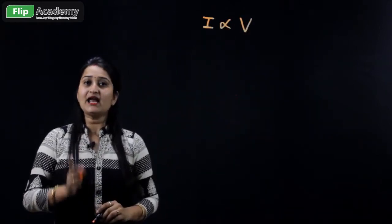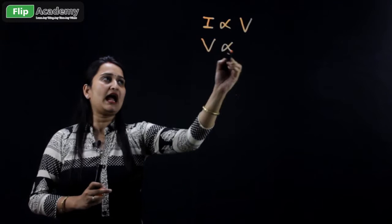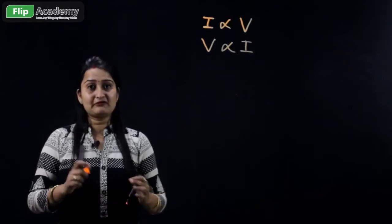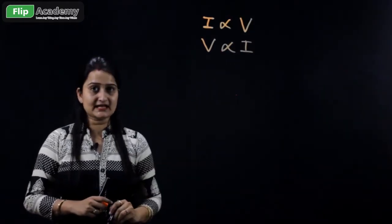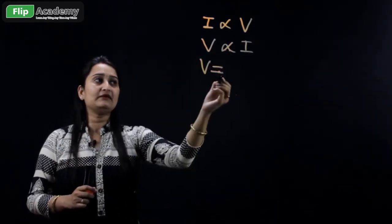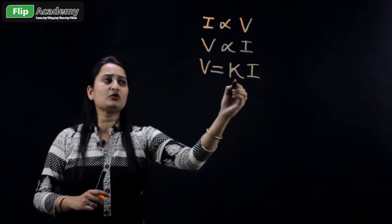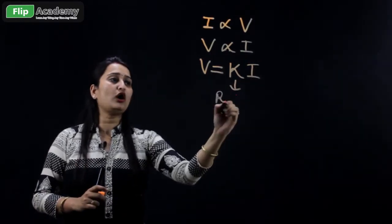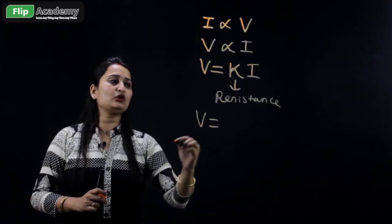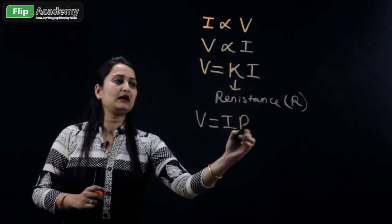The potential difference is noted by capital V. If we reverse the two equations — V and I — it remains the same, there is no change. Now if we eliminate the proportionality sign and convert it into an equality sign, according to the rule the equation is multiplied by a constant. This constant is called resistance, so the formula of Ohm's law becomes V equals I times R, where resistance is written as capital R.